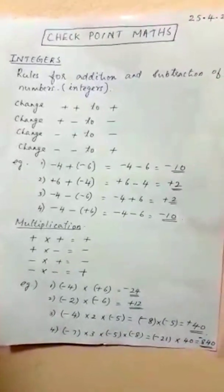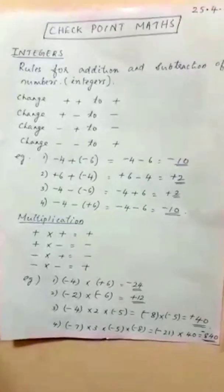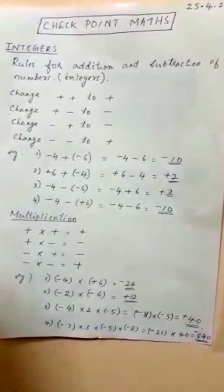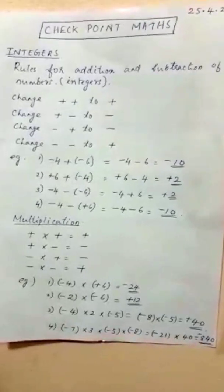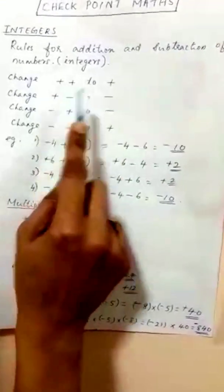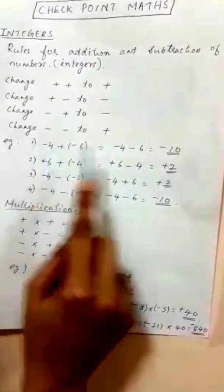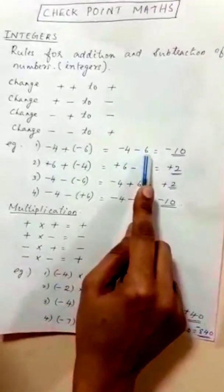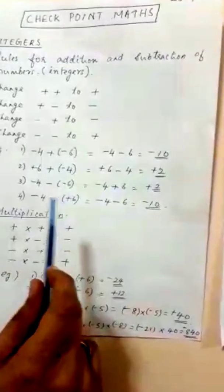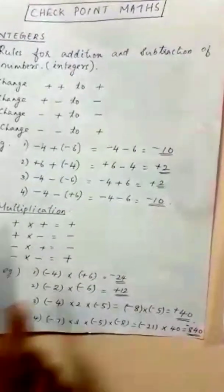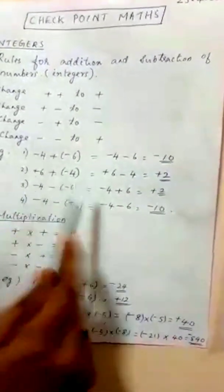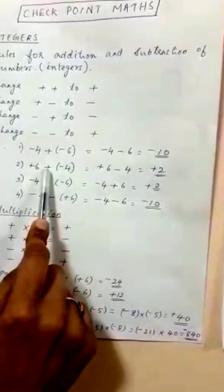Example 1: minus 4 plus minus 6. The plus and minus changes to minus sign, so it becomes minus 4 minus 6. Both are the same sign — both negative — so we add: 4 plus 6 is 10. The sign is negative, so the answer is minus 10.